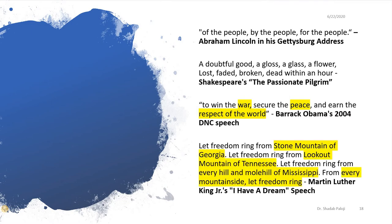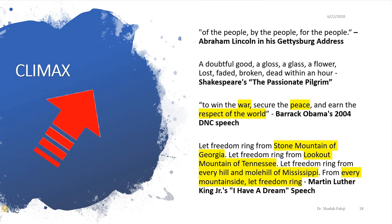Then Martin Luther King's speech: 'I have a dream. Let freedom ring from Stone Mountain of Georgia.' Then he moves on: 'Let freedom ring from Lookout Mountain of Tennessee.' Then again: 'Let freedom ring from every hill and molehill of Mississippi. And from every mountainside, let freedom ring.' Can you see the movement of the words — how it is moving from a lower level to a higher level? Such kind of words or phrases could be called as climax.